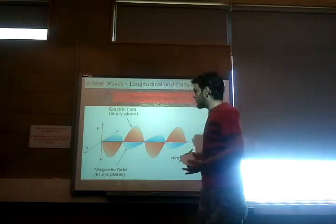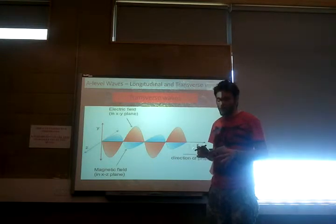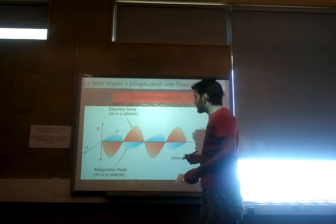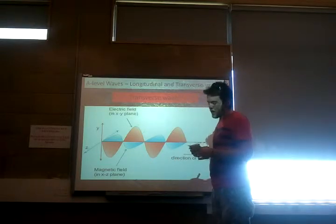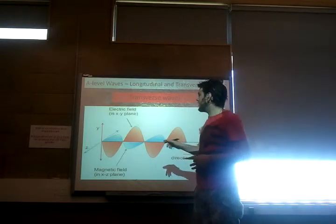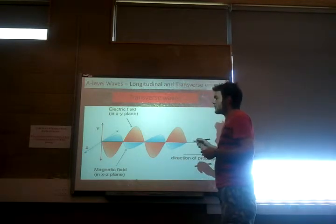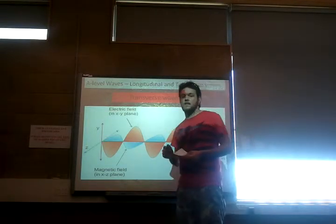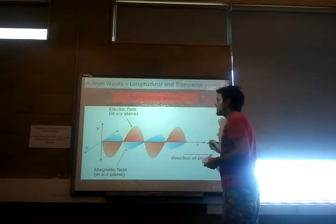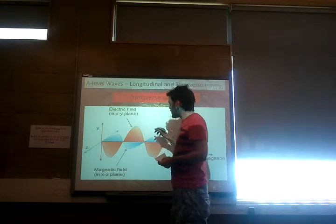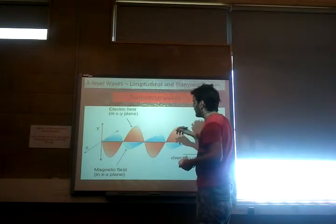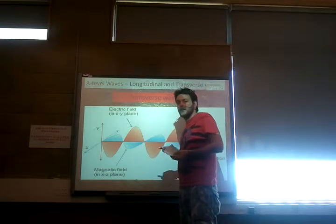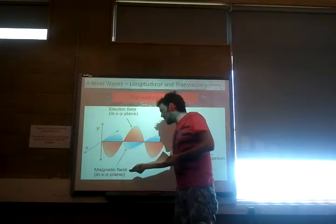All light travels through a vacuum at the same speed - roughly 300 million metres per second. Transverse waves, most commonly our light waves, span a great range through the electromagnetic spectrum. Different frequencies and different wavelengths can be used for many different things. The clues are in the name: electromagnetic - there's an electric field and a magnetic field, and it's that interaction that allows it to travel through a vacuum.